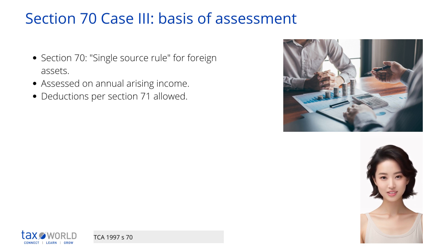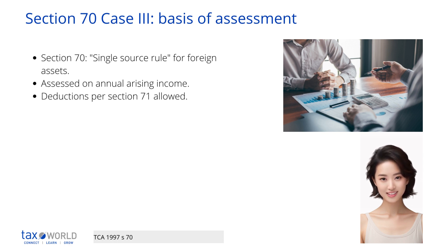This section introduces the concept of the single source rule. This rule means that all Case 3 income is considered to come from one source.